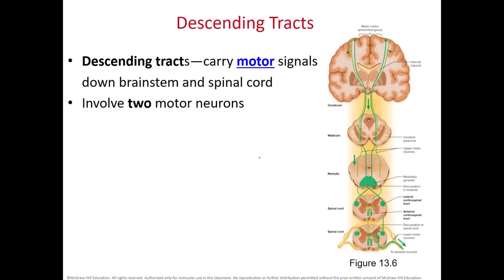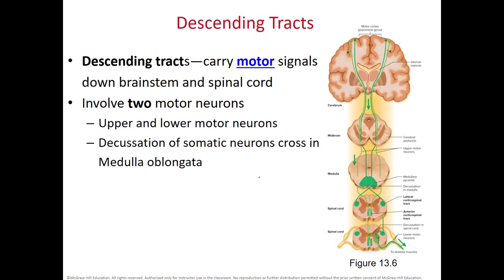Descending tracts carry motor signals and there are only two motor neurons in a row. The first is the upper motor neuron, which synapses with the lower motor neuron. For somatic motor neurons — remember somatic is going to skeletal muscles — the crossing over, or decussation, occurs in the medulla.